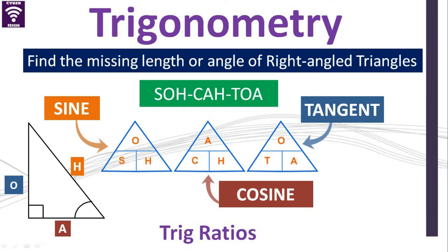We'll be talking about sine, cosine, tangent, and famously the word SOHCAHTOA. This is an instrument we use to find the missing length of a right angle triangle, or it can also be used to find an angle that could be missing.